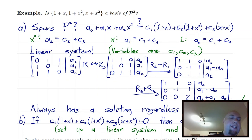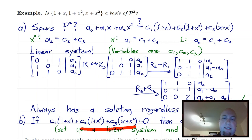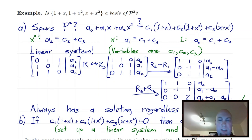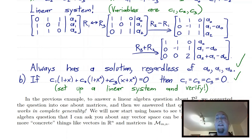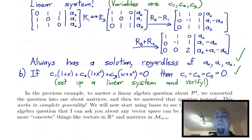For part b, to complete the basis verification, you've got to show the set is linearly independent as well. You set up the linear combination of the three basis vectors and set it equal to zero. The question is whether the all-zero solution is the only solution — and it turns out that it is. The way you do that is to match up powers of x: for example, x-squared terms give c2 + c3 = 0, and similarly for the other powers, yielding another 3×3 linear system. Solving it, you'll find the all-zero solution is the only solution. So it's linearly independent, and that's a basis of P² as well.